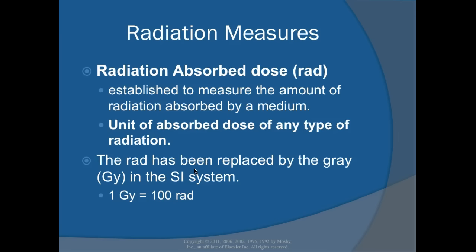The radiation absorbed dose (RAD) measures the amount of radiation absorbed by a medium — essentially how much dose the patient received. It is the unit of absorbed dose for any type of radiation. The RAD has been replaced by the gray in SI units. One gray equals 100 RADs, so it is not a 1-to-1 conversion but 1-to-100.